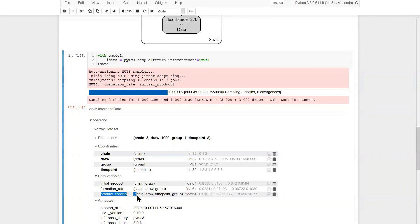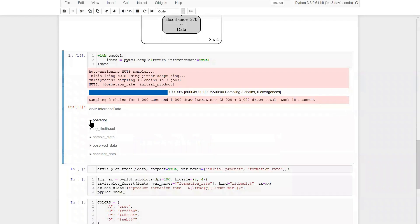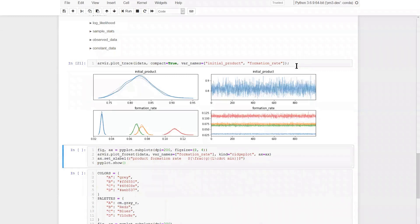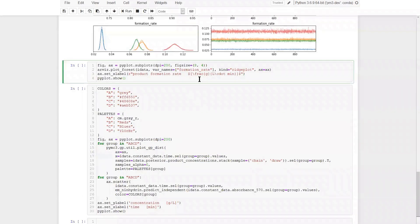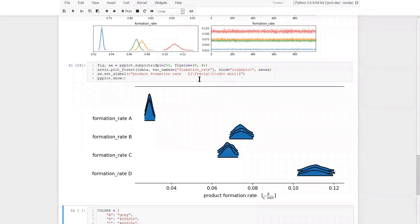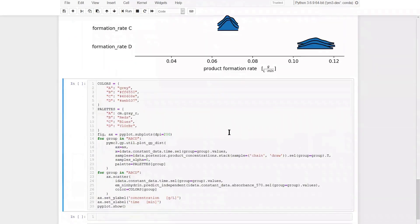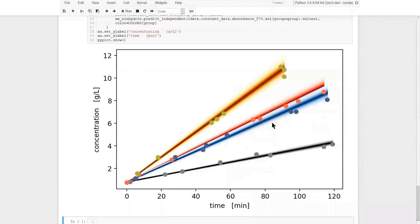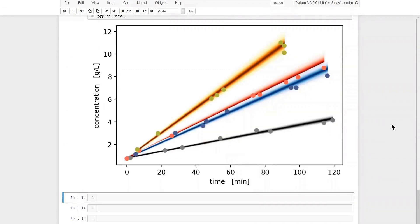We can make a trace plot with ArviZ to inspect our MCMC chains. Also, we can use plot forest from ArviZ to take a look at our product formation rate estimates. Finally, we can use the helper function plot GPDist from PyMC3 to make a nice plot of our posterior densities for the product concentration over time, as predicted by our multilevel regression model.